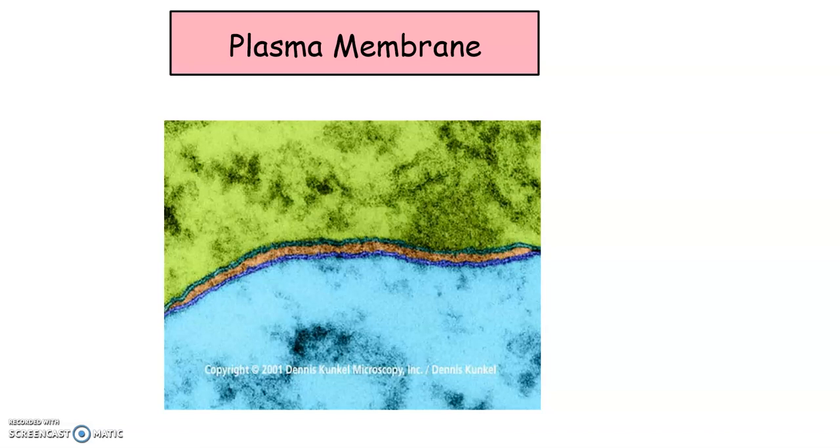This is what it looks like under the electron microscope, and notice there are two layers. So here are the two layers. The membrane has two layers, the blue layer and the kind of greenish layer, and we're going to explore what those layers look like.